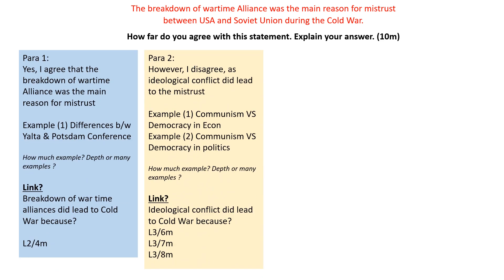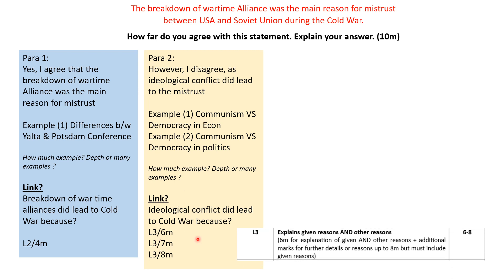Imagine you are writing paragraph one where you agree. You give one example under the breakdown of wartime alliance — it could be the differences between Yalta and Potsdam. In paragraph two you disagree, because it is ideological conflict. You give examples: communist versus democracy in economy, communist versus democracy in politics. You link it and you already get a level three, six marks.